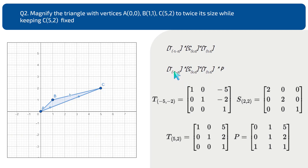If the matrices were arranged in row-major order, we would start multiplying from the left-hand side towards the right-hand side. The reason for this has been discussed in earlier videos.